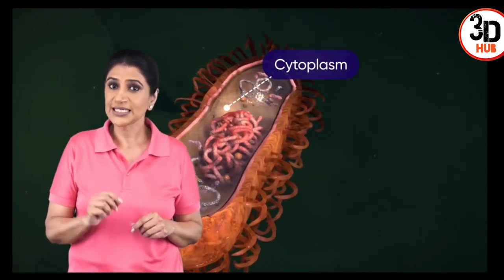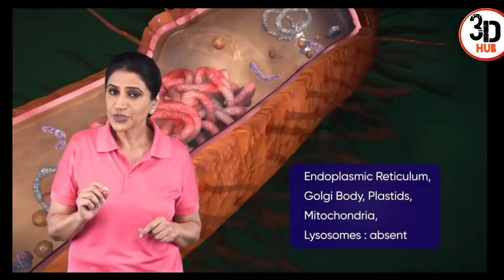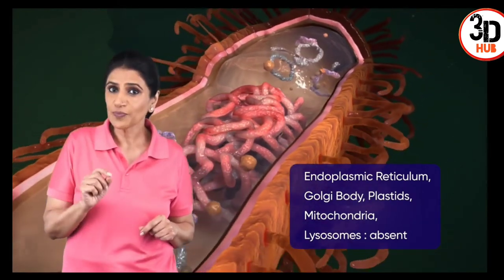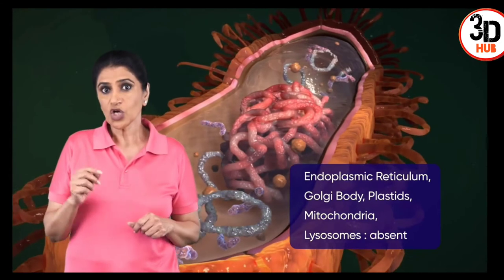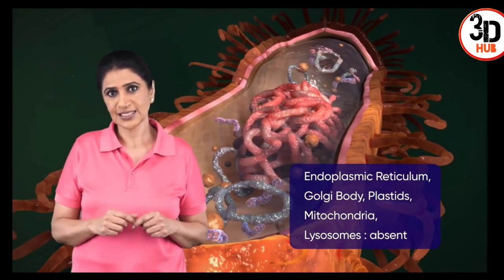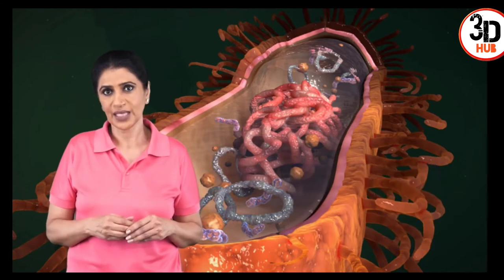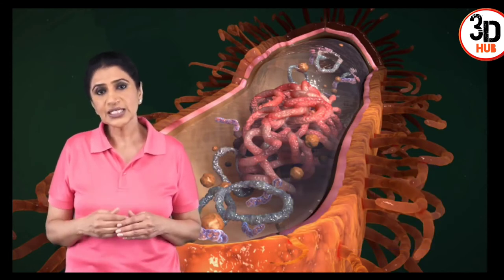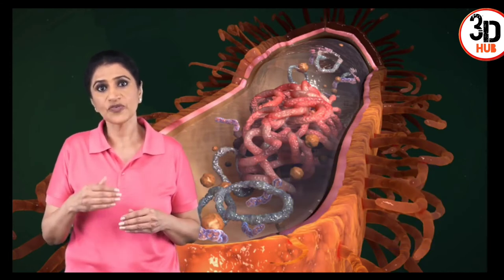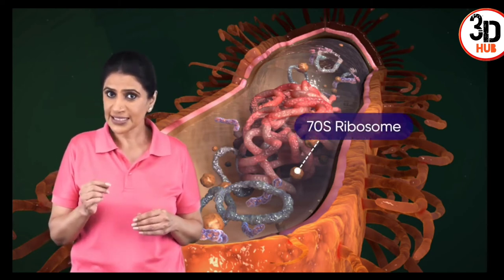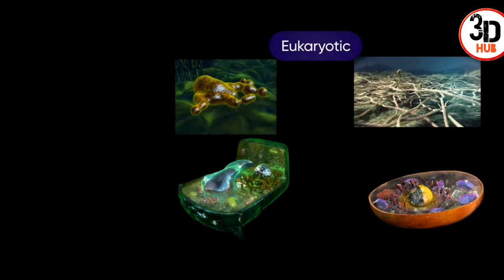The nucleoid is devoid of a nuclear membrane and a nucleolus. The cytoplasm is characterized by the absence of membrane-bound cell organelles like the endoplasmic reticulum, Golgi body, plastids, mitochondria, and lysosomes. The bacterial cytoplasm has reserved food materials and 70S type ribosomes.